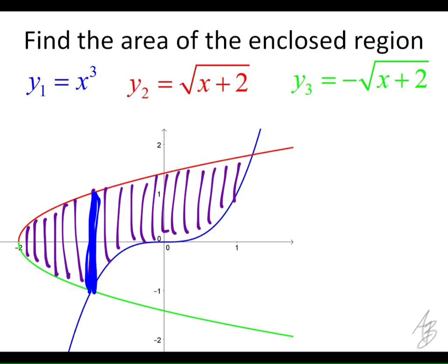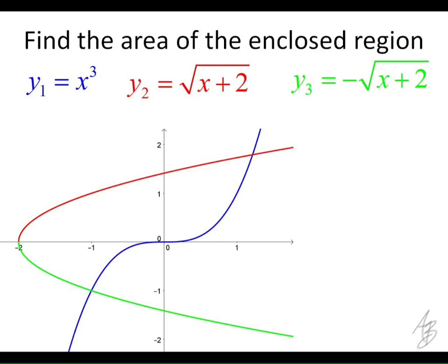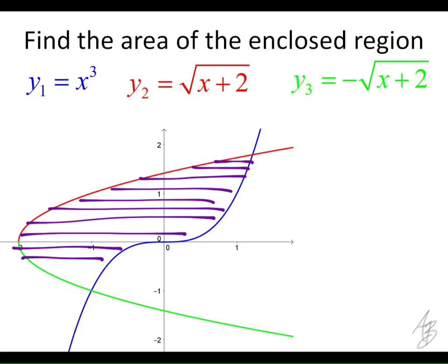If we change variables and go perpendicular to the y-axis, we're going to get one integral. Now, why am I saying we're going to get one integral? I'll make an argument why not. It looks like the blue function's on top here and the red function's on the bottom here, and the blue function's on top here but the green function's on the bottom here. So it looks like I'm going to have to split it up from maybe negative 1 to 0 and then 0 to whatever this is.